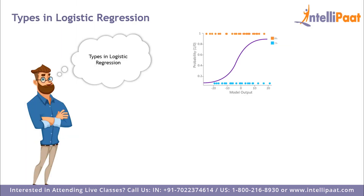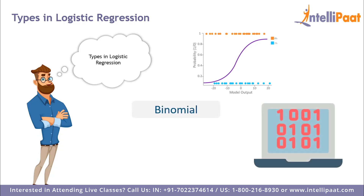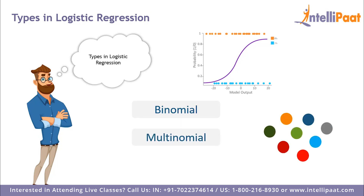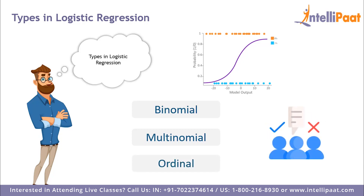In logistic regression there are three main types. Binomial: the target variable can have only two possible types — zero or one, representing win vs. loss, pass or fail, dead or alive. Multinomial: the target variable can have three or more possible unordered types, such as disease A vs. disease B vs. disease C. Ordinal: deals with ordered categories, for example a test score categorized as very poor, poor, good, or very good, given scores of 0, 1, 2, 3.